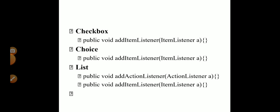For a checkbox you have to use item listener, so for adding the item listener you use addItemListener. For a choice box you also use item listener; the function used is addItemListener. For a list you can use action listener as well as item listener — use addActionListener for action listener and addItemListener for item listener.